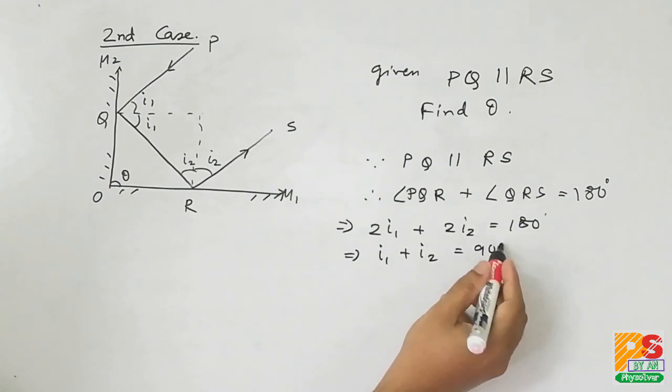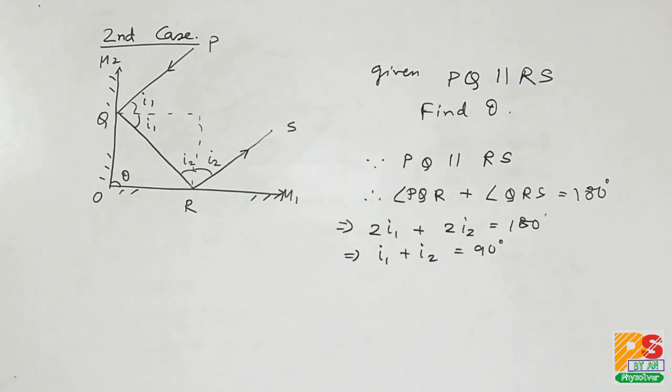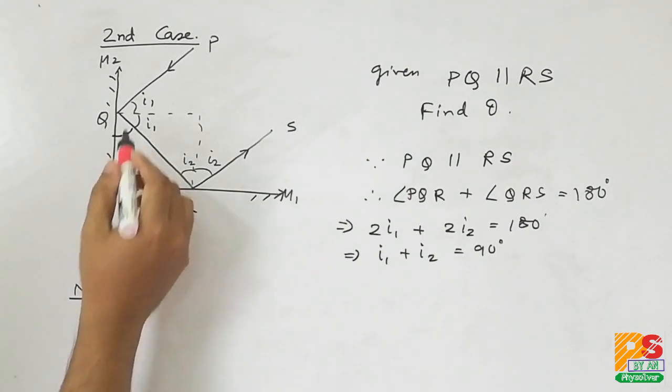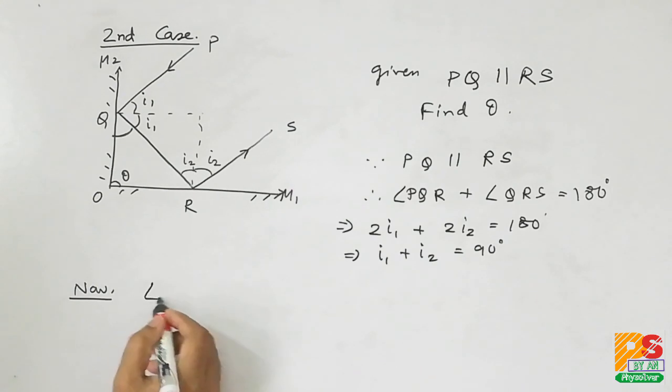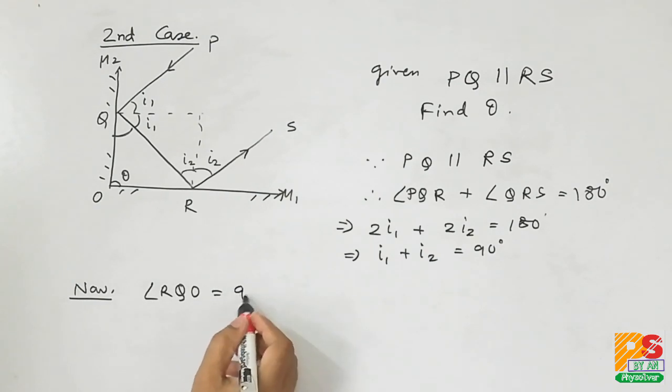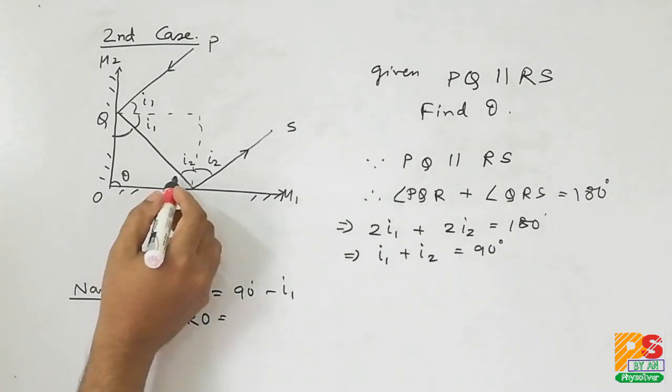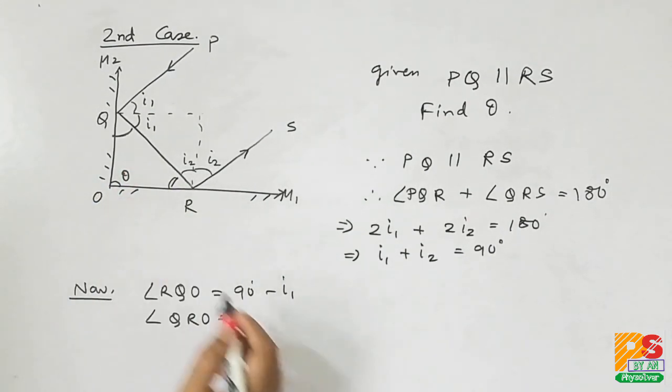We will use this formula later. Let's look at the triangle here. Angle QRO, that is this angle, is 90 degrees minus I2.